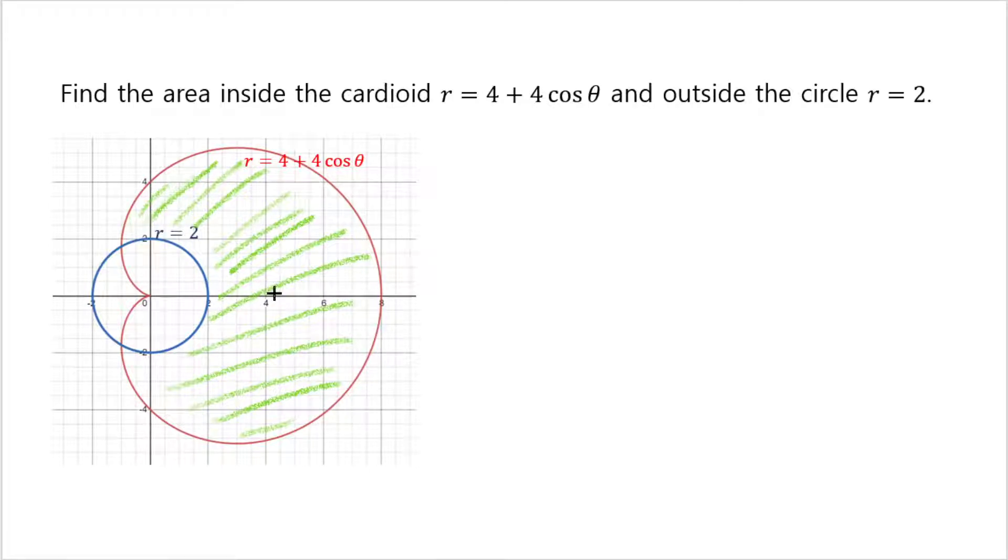Before we actually try to find the area, we need to know exactly at what angle these two meet. To do that, we will first try setting the two things equal: 4 plus 4 cosine theta equals 2. Then you have 4 cosine theta equals negative 2, so you're looking for cosine theta equals negative 1 half.